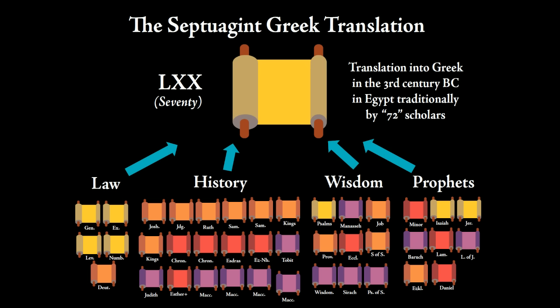A student asks if the Septuagint has been translated into English. Yes, it has — you can get a hold of that. It's initially a translation into Greek, and the Greek has now been translated into English. Another student asks if this is the Bible that Catholics use — we'll get to that. The Catholics don't exist yet when it's being translated, but the short answer is no.